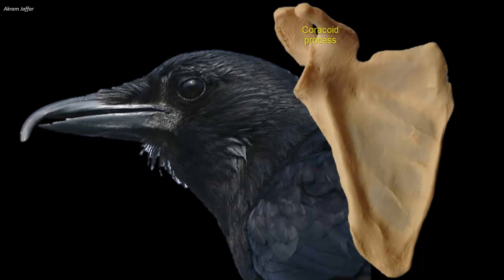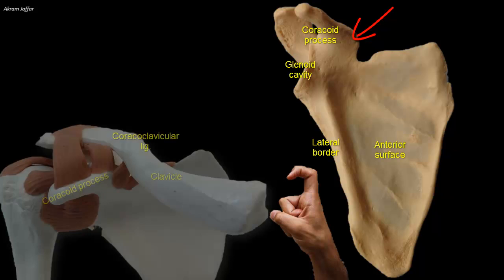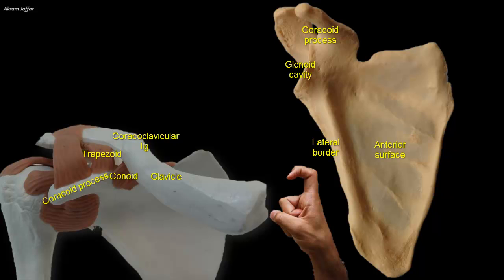The coracoid process is beak-like — coracoid means like a crow's beak. The coracoid process is superior to the glenoid cavity and projects anterolaterally. The process also resembles in size, shape, and direction a bent finger pointing to the shoulder. The knuckle of the bent finger provides attachment for the coracoclavicular ligament, including its conoid and trapezoid parts.